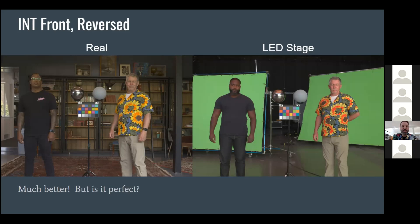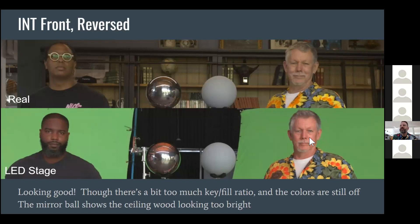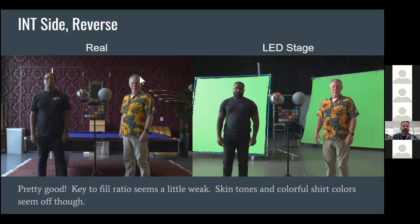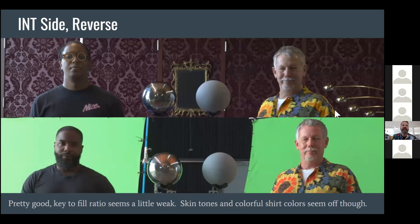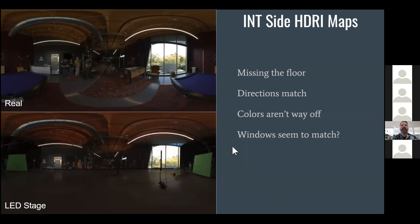The result looked better than before by quite a bit in terms of reproducing the lighting, though the key-to-fill ratio still felt a little muted. The next interior lighting scenario — lighting from the side — worked out a lot better, partly because there are LED panels to the sides of the actors in that setup. Zooming in on faces, things were pretty good. Something that seemed off is that the specular reflection of the practical LED lights inside the library was much easier to see in the real shot, and quite muted in the virtual production version.